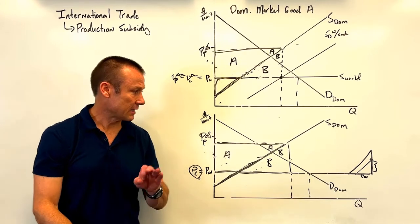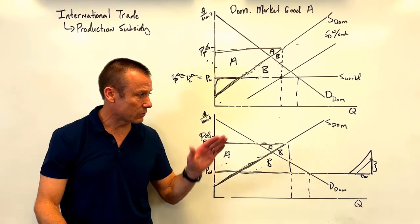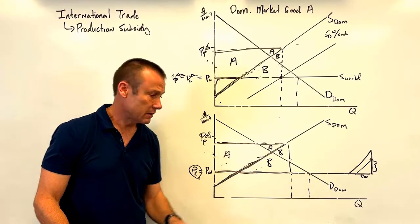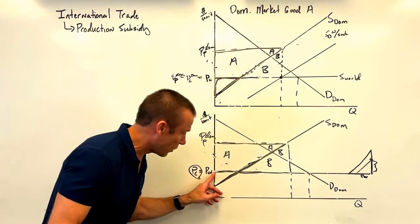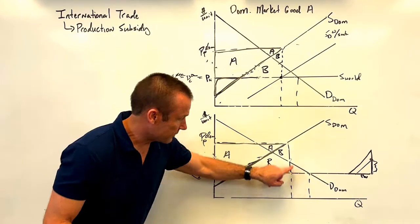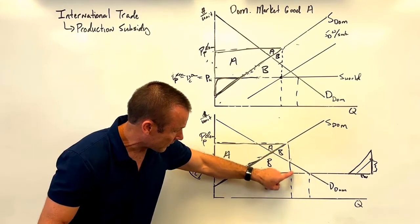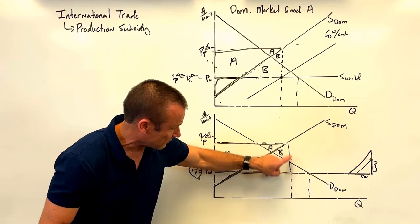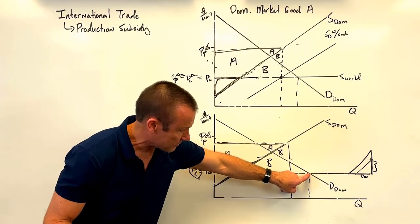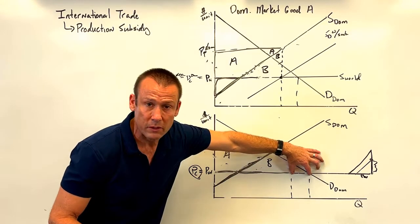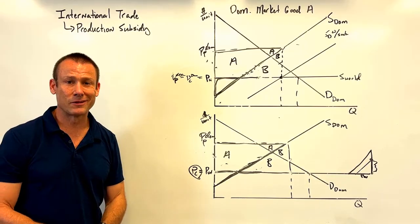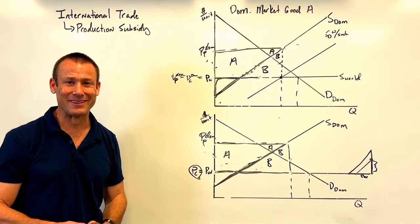The wedge method is the cleaner approach — just bring the subsidy wedge in, read off how much is produced domestically, and the difference between the per unit subsidy height and domestic demand gives the new level of imports. Hope that made sense — we'll see you in the next video.